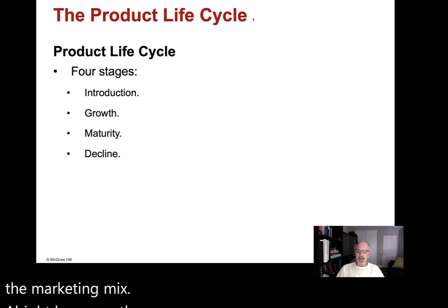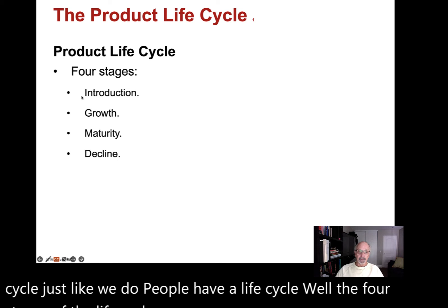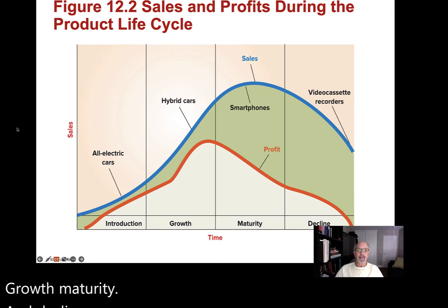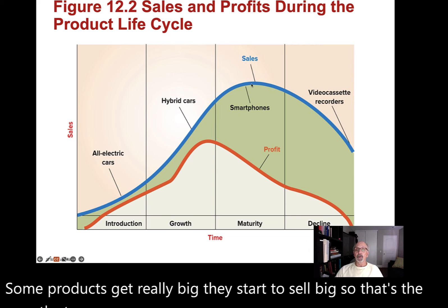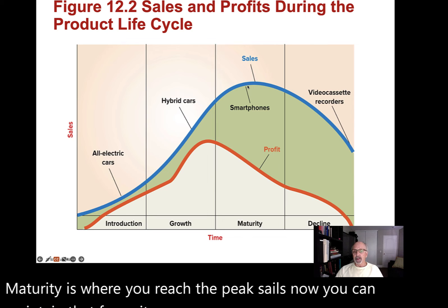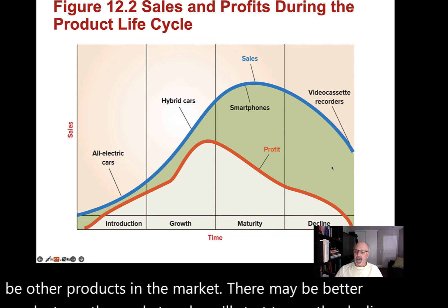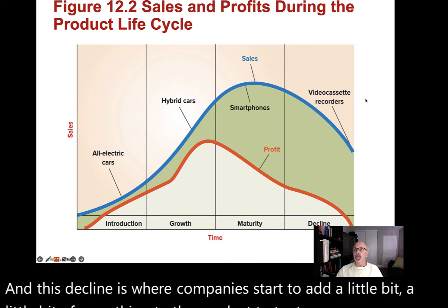Every product has a life cycle, just like we do. The four stages are introduction, growth, maturity, and decline. All-electric cars are about at the introduction stage right now. Some products start to sell big — that's the growth stage. Hybrid cars, for example, reached maturity, which is where you reach peak sales. You can maintain that for a while, but eventually other better products come to market and you start to see the decline. In the decline stage, companies start adding something to the product to try to level out sales and maintain them a little longer.